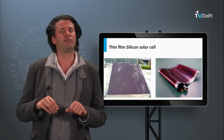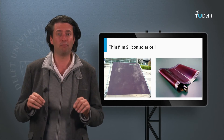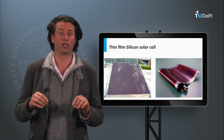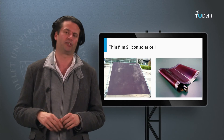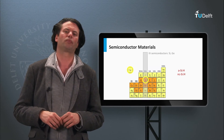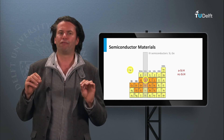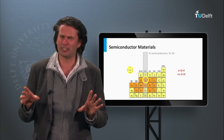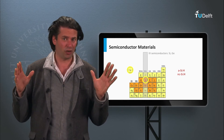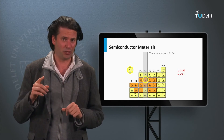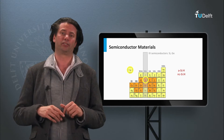An advantage of thin film silicon solar cells is that they can be deposited on glass substrates and flexible substrates. The first question we have to answer is: which type of silicon alloys are being used as an absorber layer?